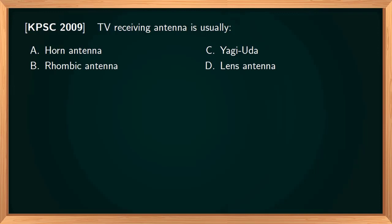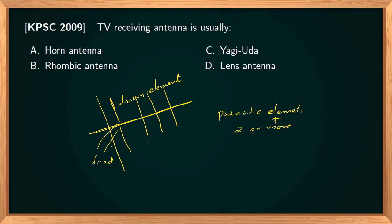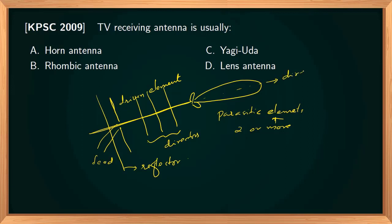The TV receiving antenna is usually the Yagi-Uda antenna. It contains a driven element — usually a folded dipole — where the signal is fed or output is taken, plus parasitic elements. The parasitic element longer than the driven element is called a reflector; shorter elements are directors, which focus the beam in a particular direction, producing a directional radiation pattern.